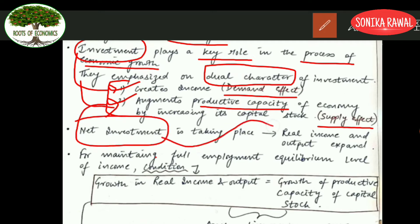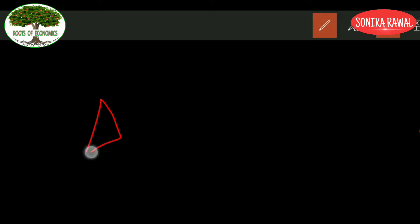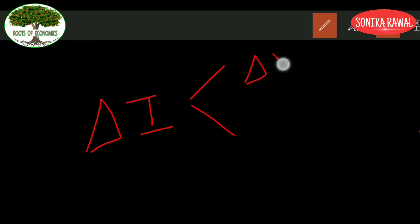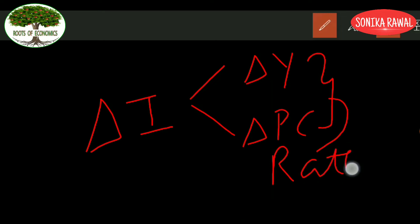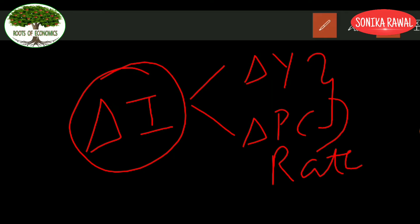Together, these will create net investment, which will tend to expand real income and output. To revise: the change in investment can lead to a change in income due to the demand effect, or a change in productive capacity due to the supply effect. These two together will decide the rate of income growth, and everything hovers around investment.